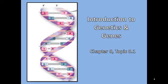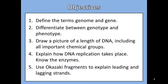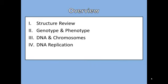Chapter 8, Topic 8.1, Introduction to Genetics and Genes. In this topic, the objectives are: define the terms genome and gene, differentiate between genotype and phenotype, draw a picture of a length of DNA including all important chemical groups, explain how DNA replication takes place, know the enzymes, and use Okazaki fragments to explain leading and lagging strands.